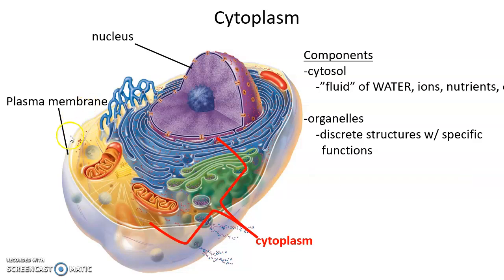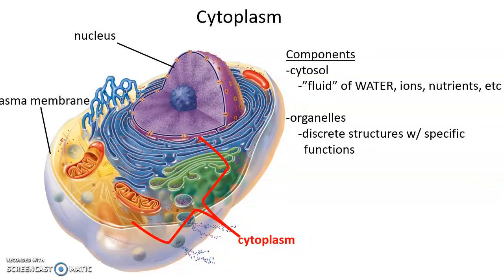We've completed talking about the plasma membrane and are now moving on to the cytoplasm. The cytoplasm contains all the various organelles, each with its own specific function. You can think of them as little organs inside the cell. Surrounding all the organelles is the fluid referred to as cytosol. Cytosol is mostly water, but also has lots of ions, nutrients, and proteins. It's more like a gel than a liquid.